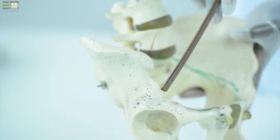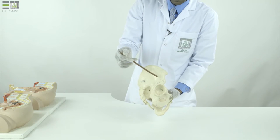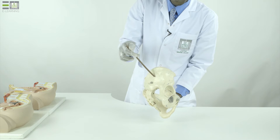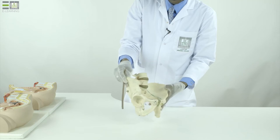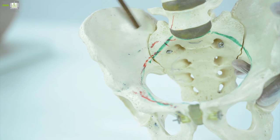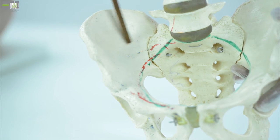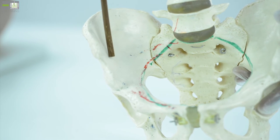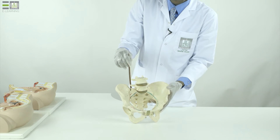There's also the anterior inferior iliac spine. The outer surface of the ilium has the gluteal surface. The inner surface has the iliacus fossa for the iliacus muscle and the articular surface which forms the sacroiliac joint.